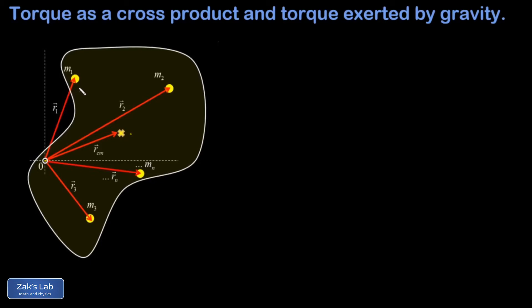Gravity pulls straight down on every one of these point masses, and each of those little weights is found by taking the mass at that point and multiplying by g. I'll put a vector hat on this to indicate it's a vector force pointing straight down, so m1g is the force of gravity on m1, and so on.